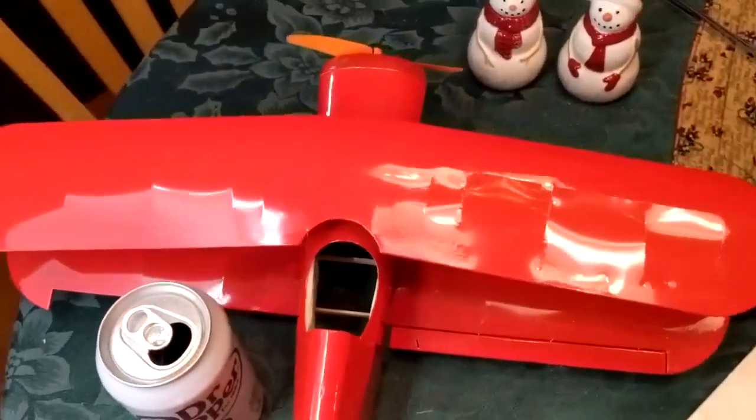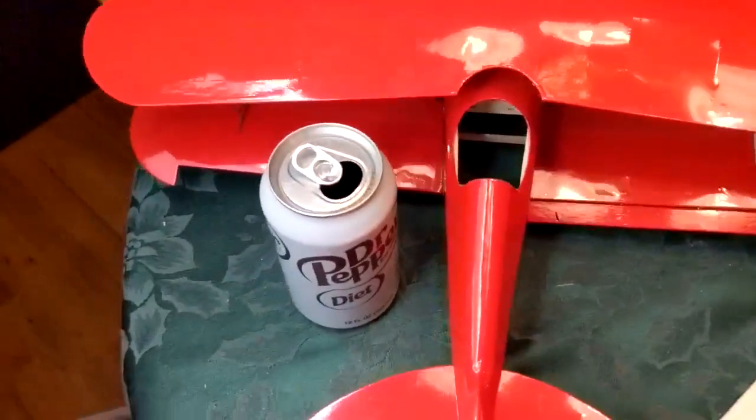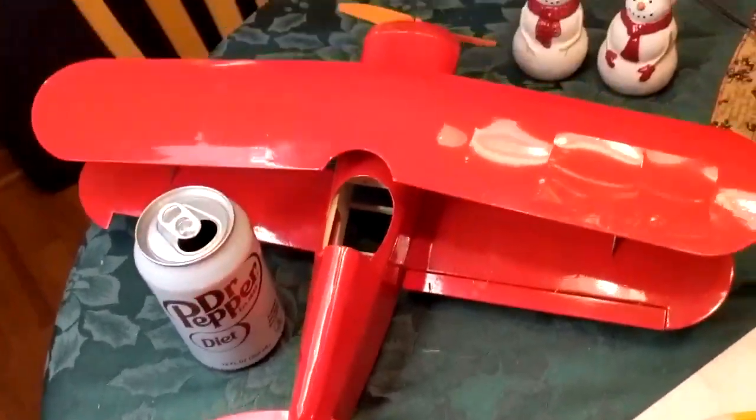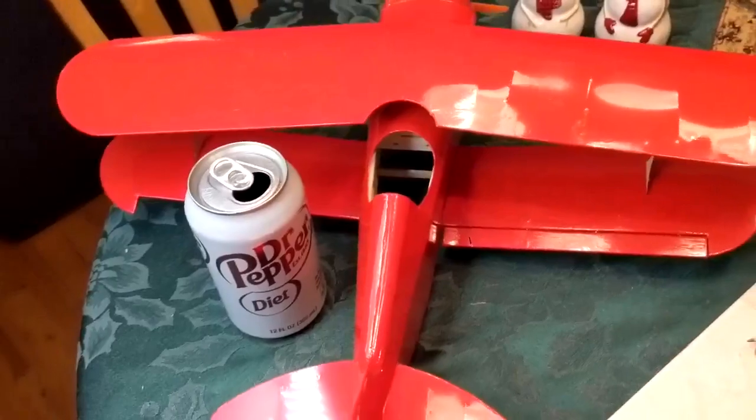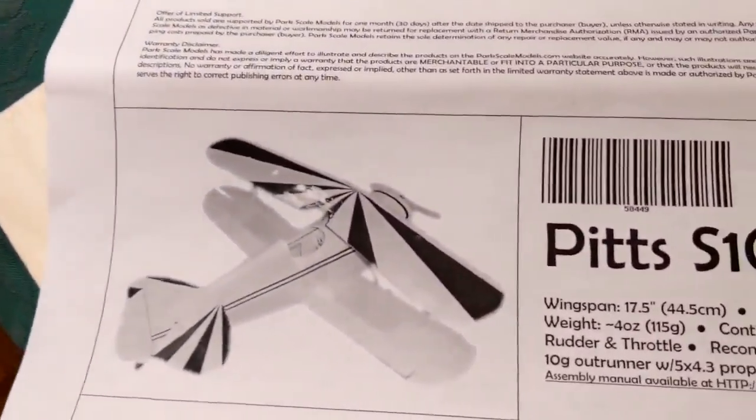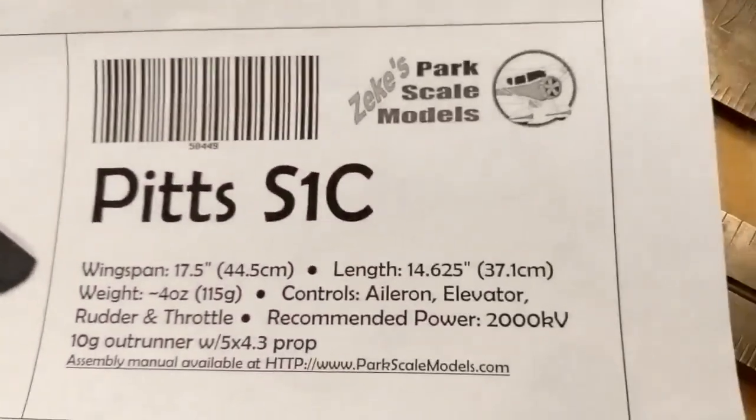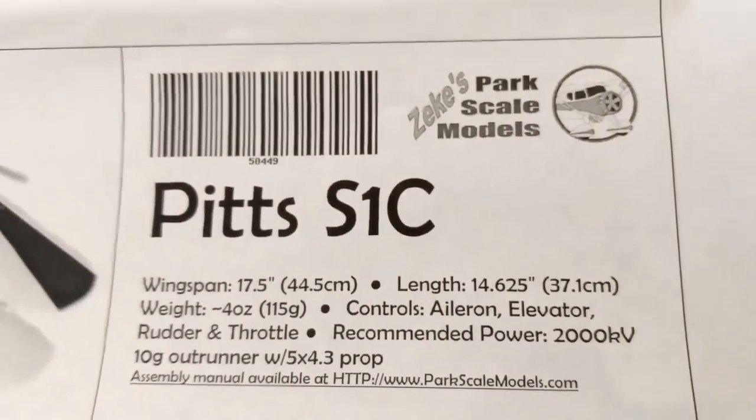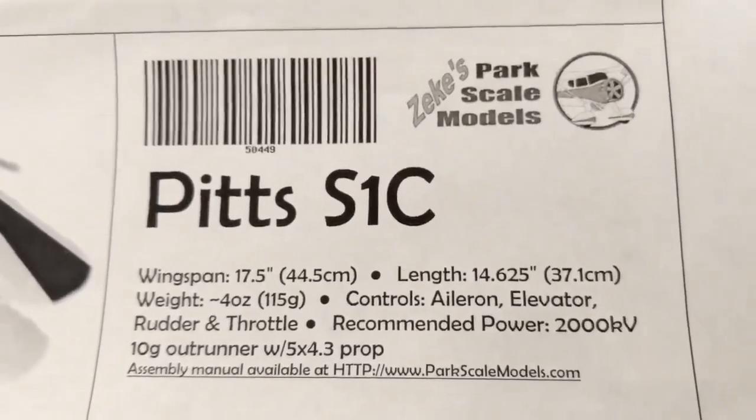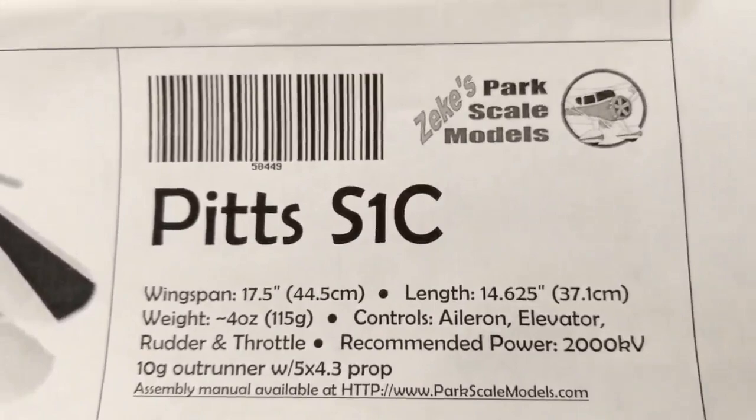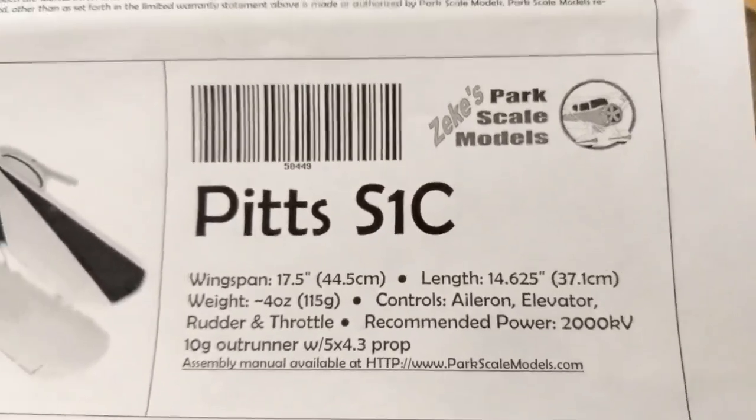This is a tiny Pitts biplane, a radio control model, four channel full house. A can of soda will give you some idea of the size of it. It's made from this kit here, Zeke's Park scale models. This kit is unfortunately out of production, but it's one I've had in my supplies for some time.